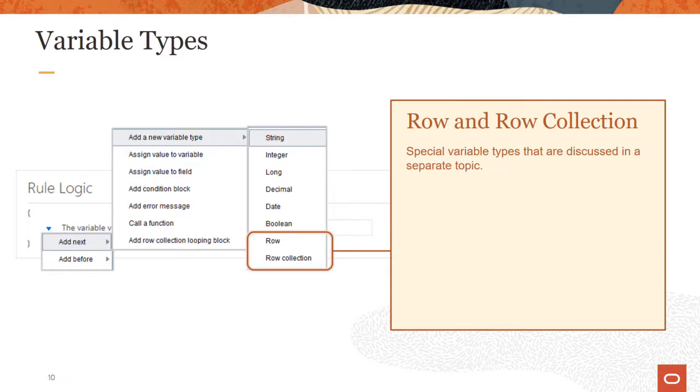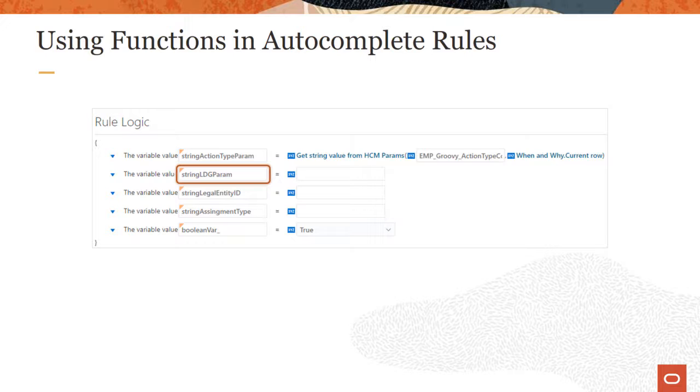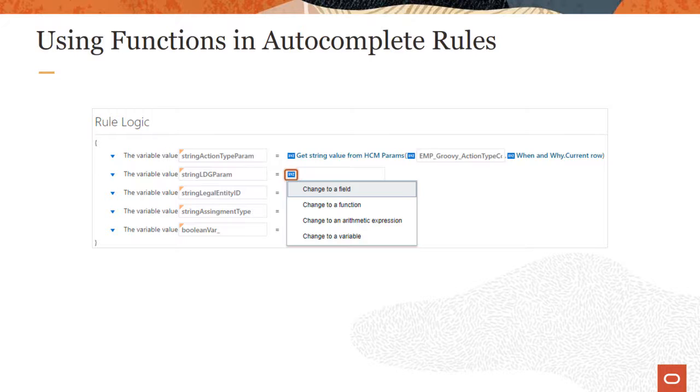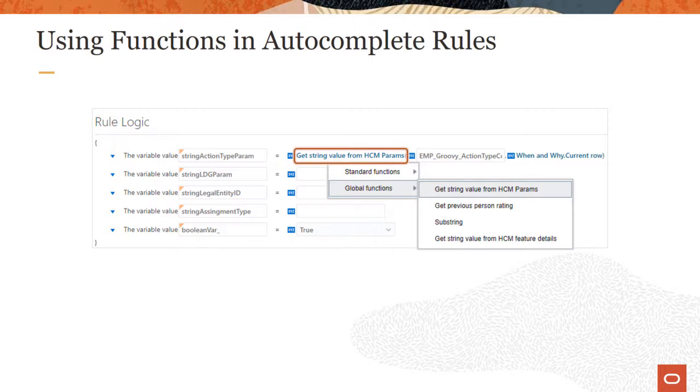Row and row collection are special variable types which are discussed in a separate topic. To create an autocomplete rule you first have to create the variables needed to hold the values for your rule. To change the initial default operand type to a function click the XYZ icon. The name of the initial default function is displayed as a hyperlink. Click the link to see what other functions are available for the variable type.